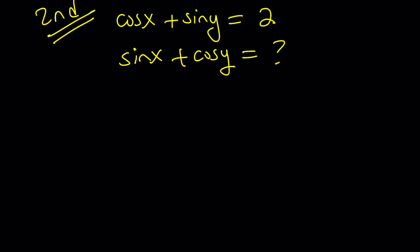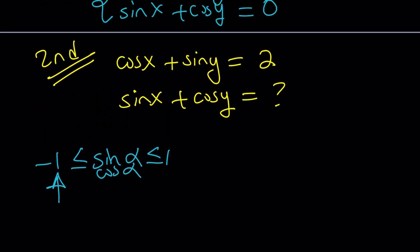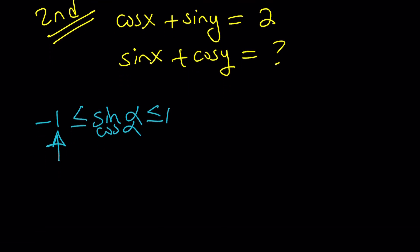So the second method is basically using the fact that sine and cosine are bounded. Meaning that if x and y are real, or in general alpha, let's say the alpha is the angle, then sine of alpha is always going to be between negative 1 and 1 inclusive. And the same thing is true for cosine alpha. If we apply it to our situation, I don't really care about the lower bound because I'm interested in a larger value like a 2. And you'll see that 2 comes from 1 plus 1.